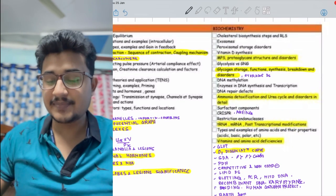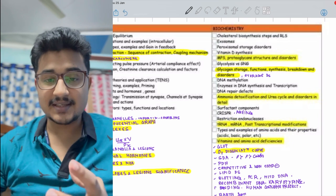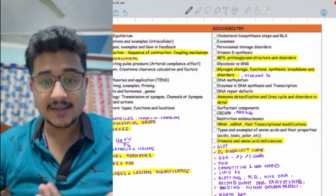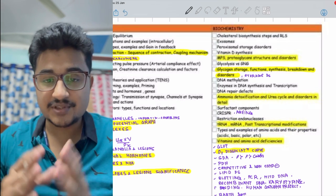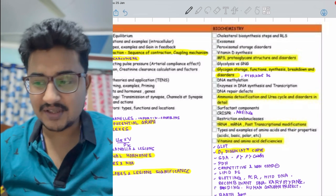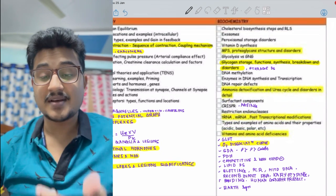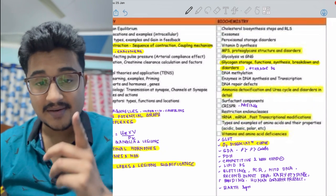In biochemistry perspective, mainly clinical biochemistry and the genetic part for INICET. In clinical, the storage disorders you will get - all the glycogen storage disorders, the metabolic disorders you will get.